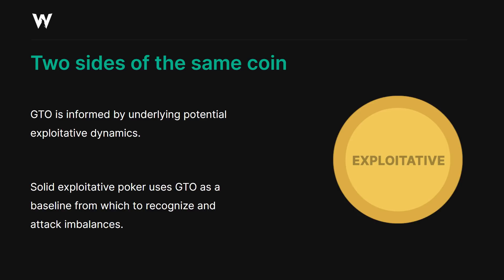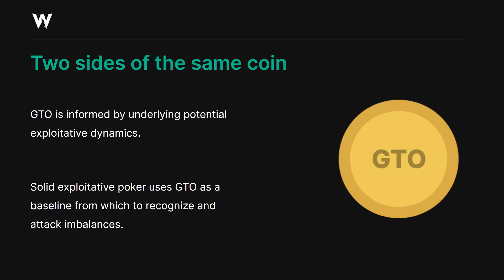Conversely, you need a solid baseline from which to recognize imbalances. For example, how can you say your opponent is too value-heavy or too bluff-heavy if you don't know what the correct amount of value-heaviness is? You need some sort of common ground in order to recognize when your opponent has deviated from that.